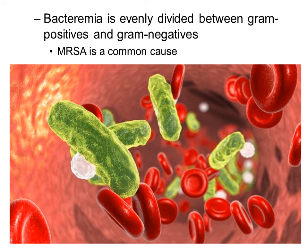Bacteremia is evenly divided into gram positive and gram negative. If you were to isolate the blood from a person that has bacteremia, there would be a 50 percent chance that a gram positive bacteria would cause it, such as Staphylococcus aureus, and then a 50 percent chance that a gram negative bacteria can cause it.